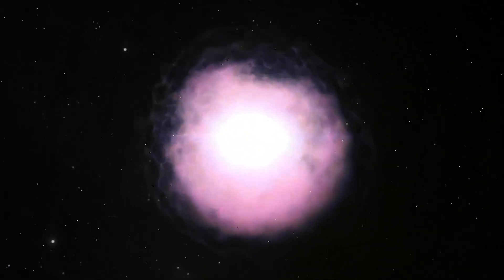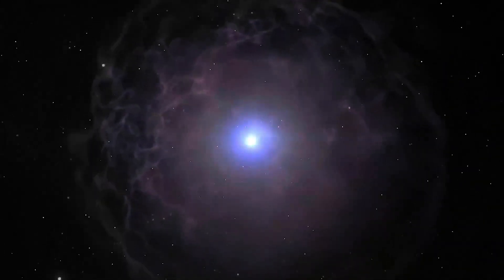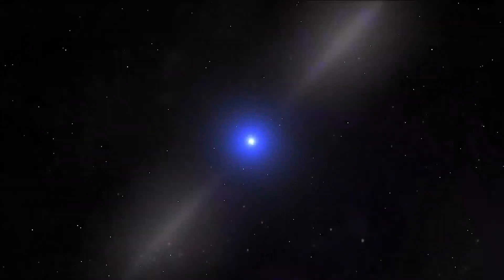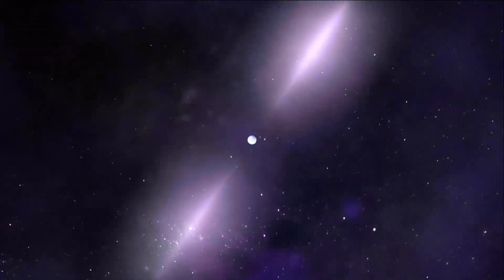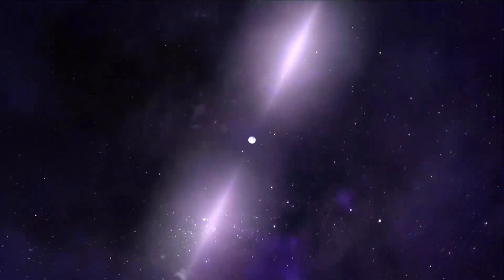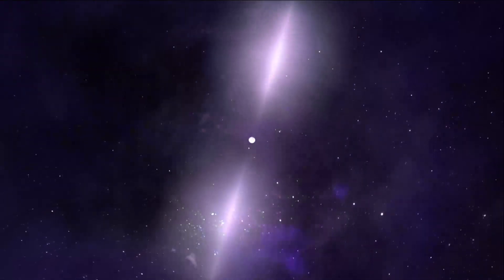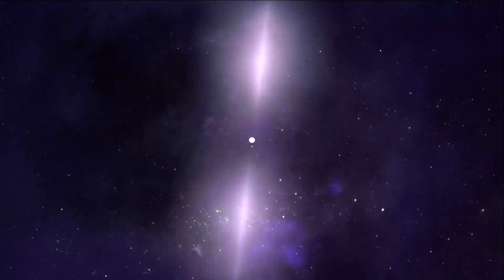A neutron star is the crushed core of a massive star that exploded in a supernova. Pulsars, like J0030, are rapidly spinning neutron stars that sweep beams of energy across our line of sight, much like a lighthouse.